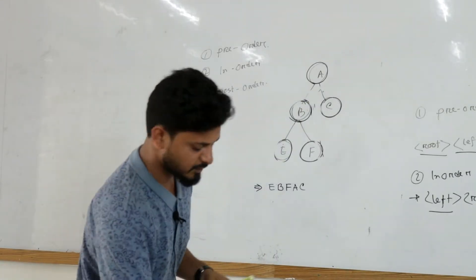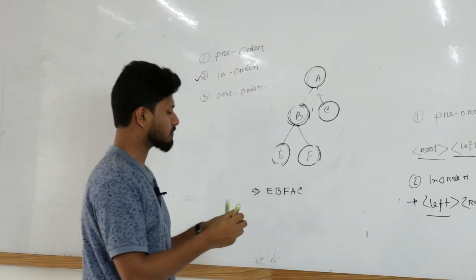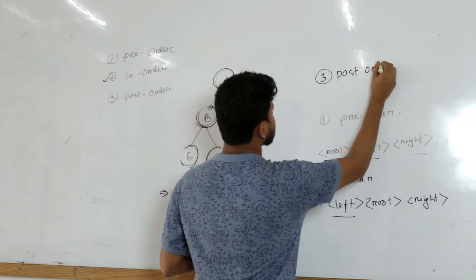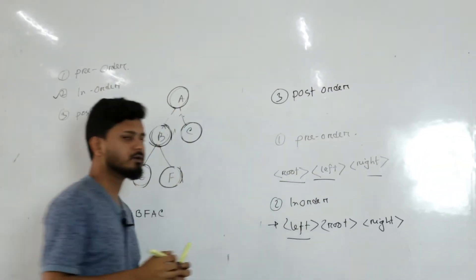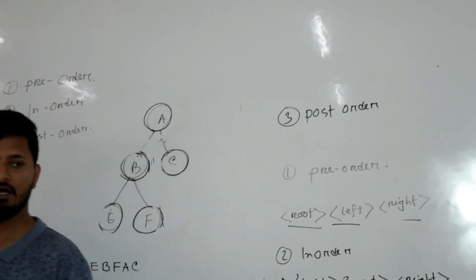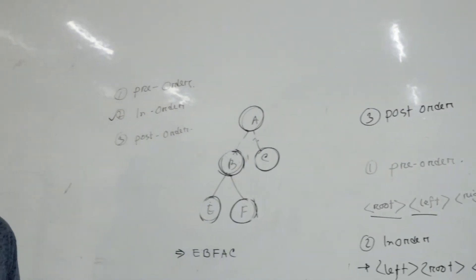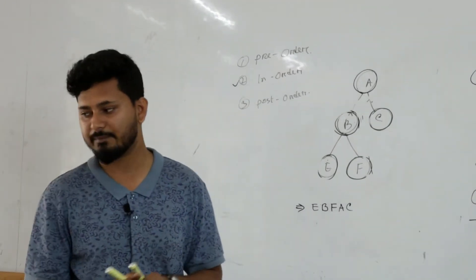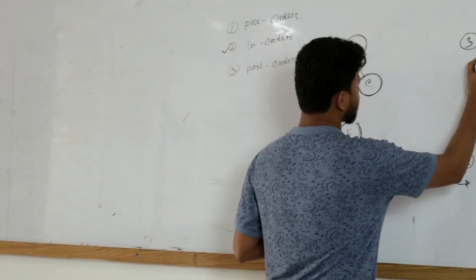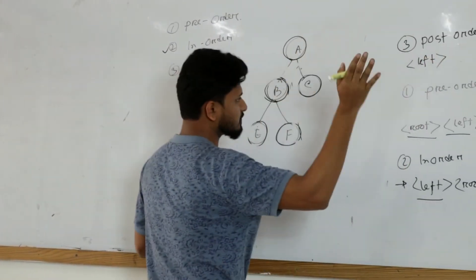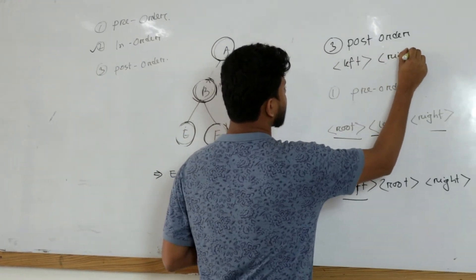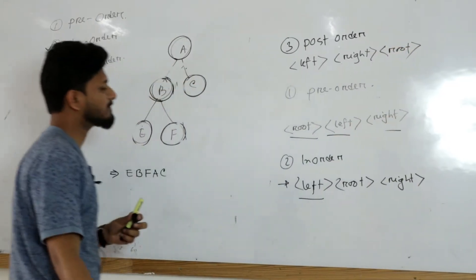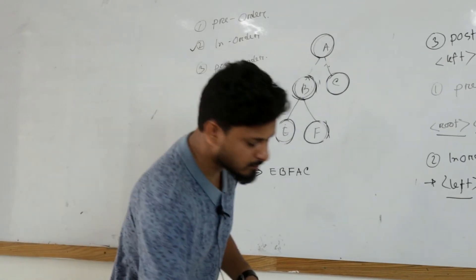Before I go to post-order, if you have any questions you may raise your hand. The third traversal is post-order. The formula for post-order is: left first, then right, and at last the root. We are going to solve this tree again using post-order.